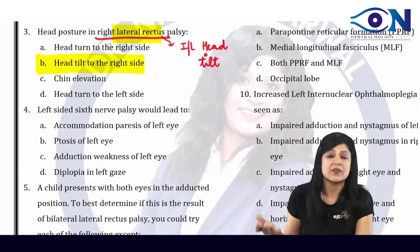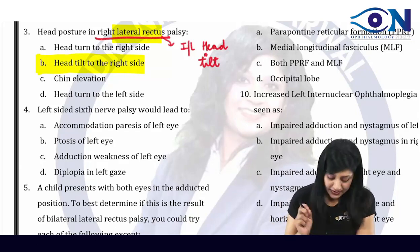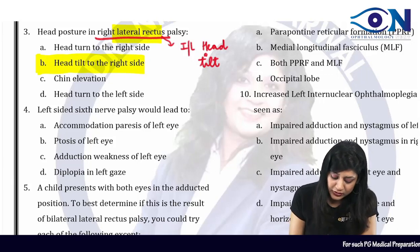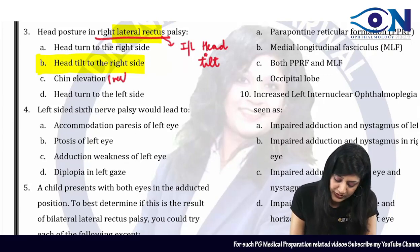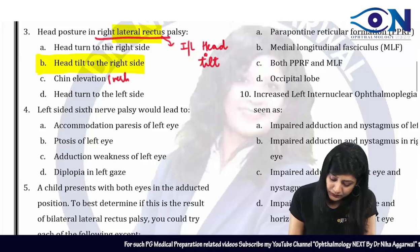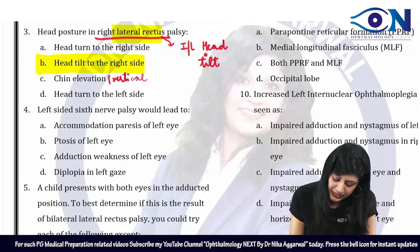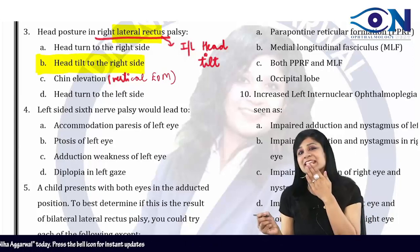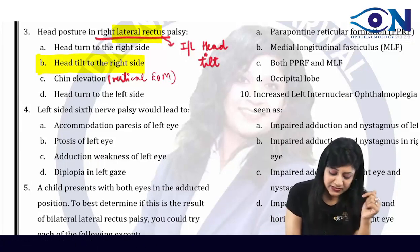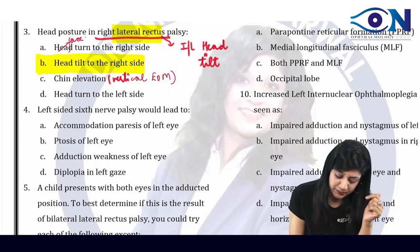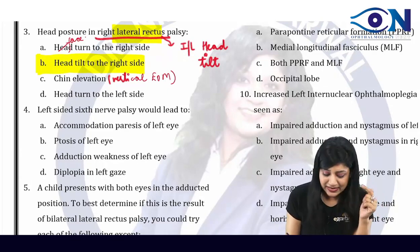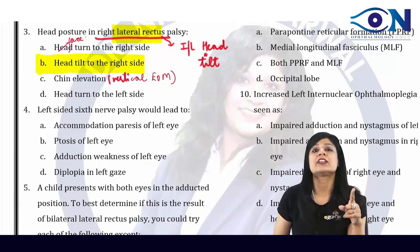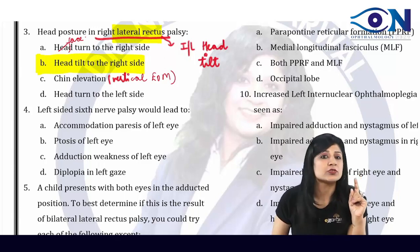It is the head tilt towards the right side, so the answer will be B. Usually you have to remember: chin elevation is for the vertical extraocular muscles. Face turn is brought about by the horizontal muscles, and head tilt is usually for the obliques. But because of isolated nerve palsy, lateral rectus is also going to give you the head tilt.